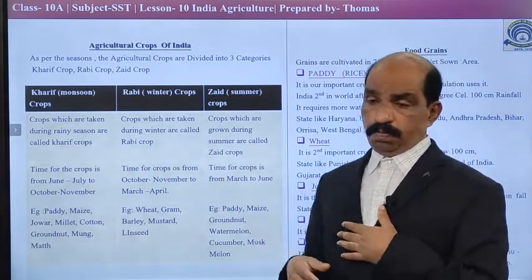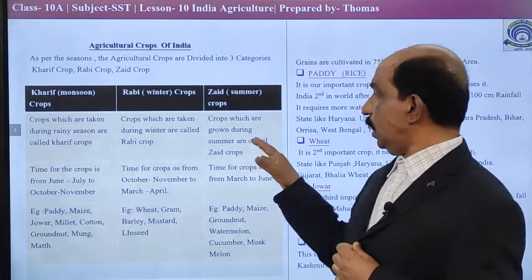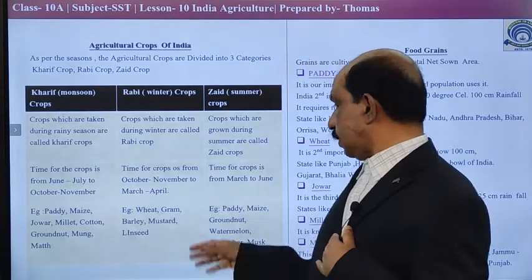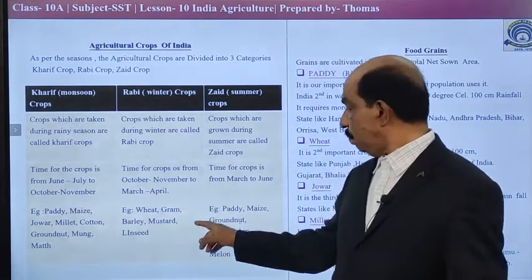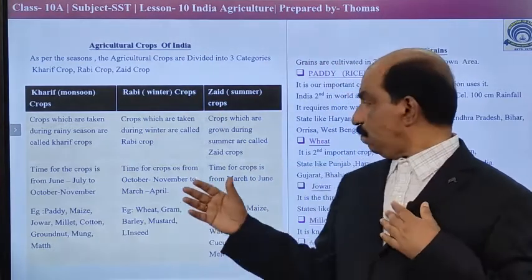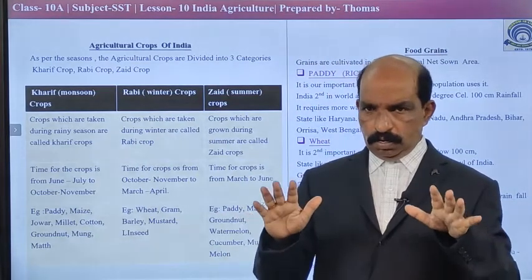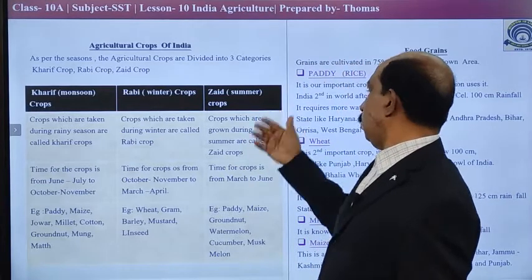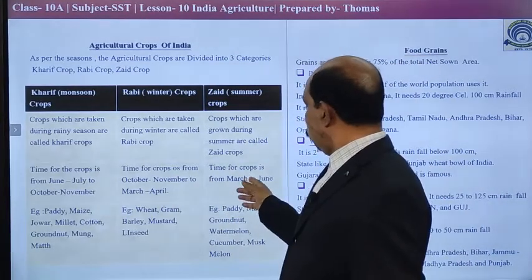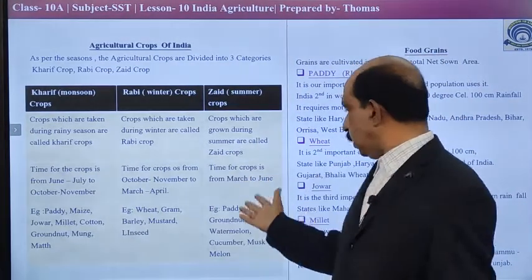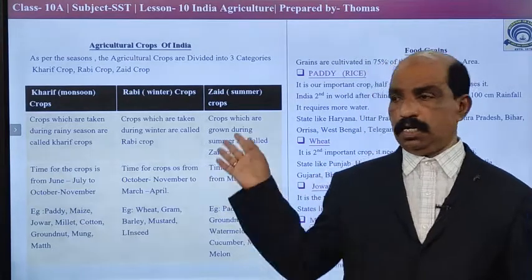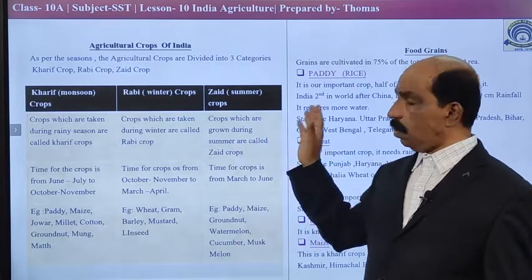Another crop is Rabi crop. Rabi crops are cultivated during the winter season, when moderate climate conditions exist, from November to March or April. Wheat, gram, barley, mustard, linseed — these are Rabi crops. Wheat fields can be seen growing with the best greenery everywhere nowadays. Likewise, Zaid crop is generally cultivated in the summertime, from March to June. Crops grown during summertime are called Zaid crop — mango and many fruits, paddy, maize, groundnut, watermelon, cucumber, musk melon, etc. So crops have been divided into three sections: Kharif crop, Rabi crop, and Zaid crop.